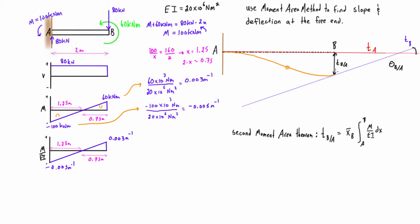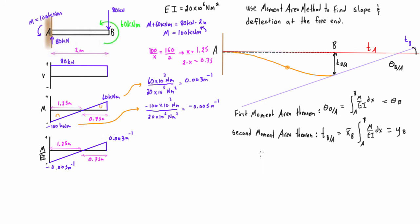From the second moment area theorem, the tangential deviation T_B with respect to A is the vertical separation of the two tangent lines at point B, which equals the actual deflection of the beam. Because the slope at A stays horizontal due to the rigid connection, when we find theta B with respect to A, that is actually just theta B, and the tangential deviation of B with respect to A is just the deflection at point B.